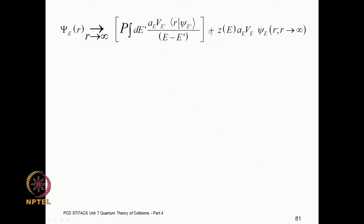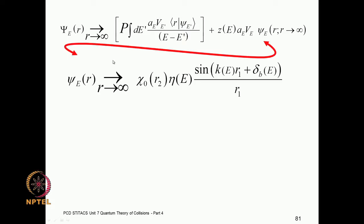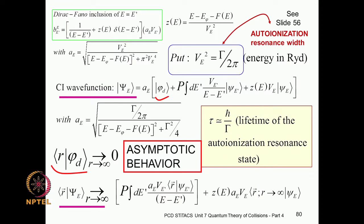These two terms describe the asymptotic wave functions. This is the de Broglie–Schrödinger wave function — the coordinate representation of the state vector. One term, coming from scattering theory, is the usual sinusoidal function divided by r plus the background phase shift. The other is weighted by the interaction term V_E.